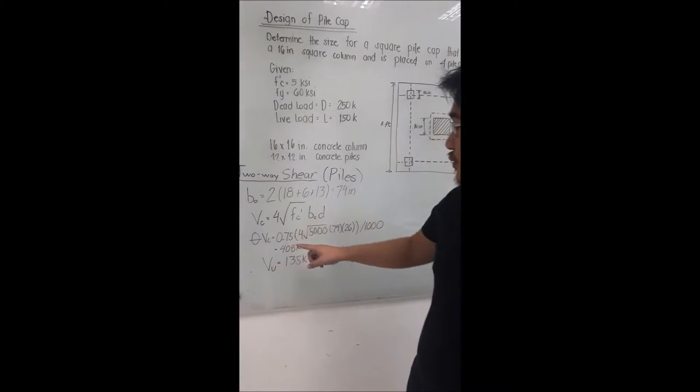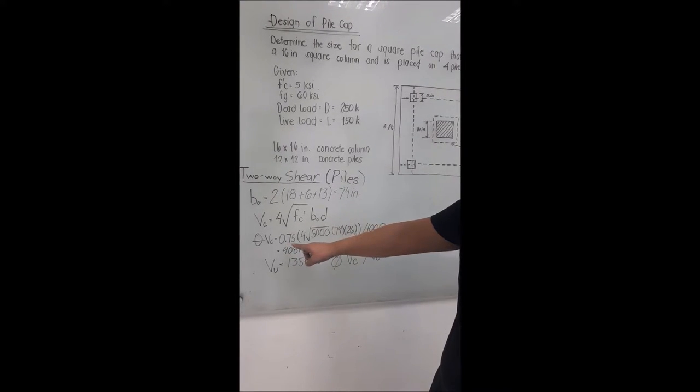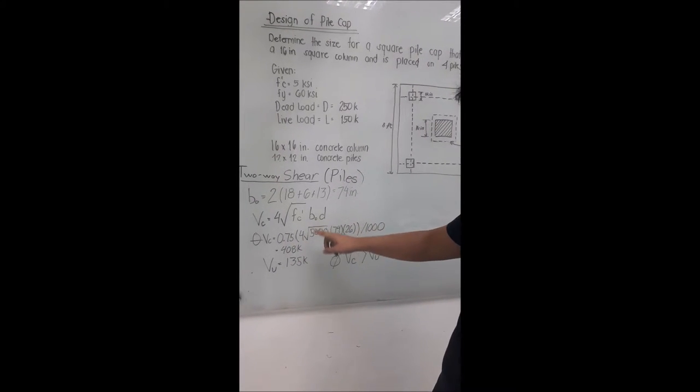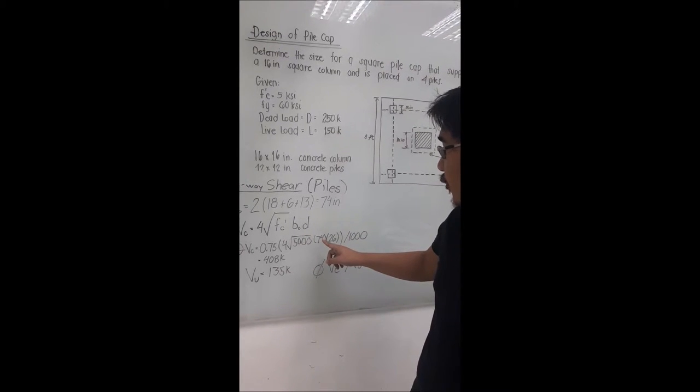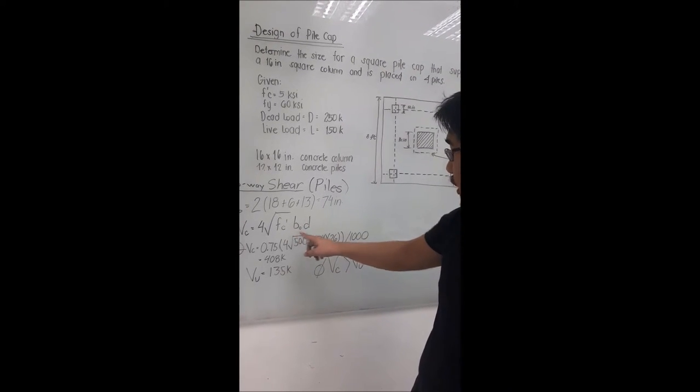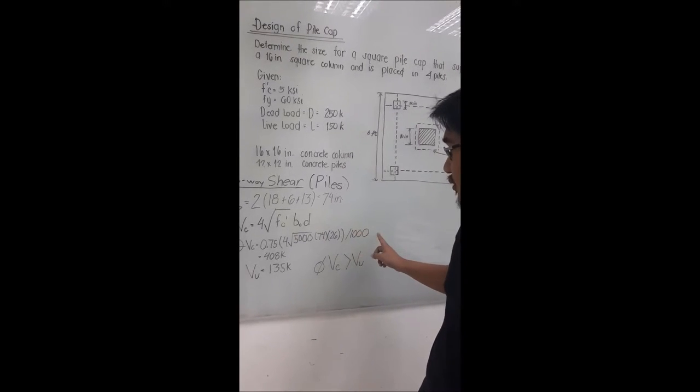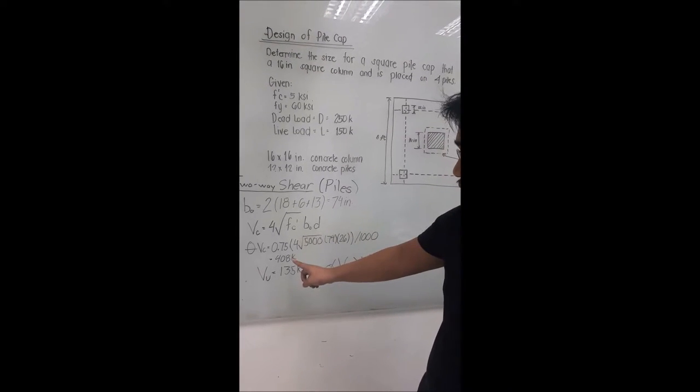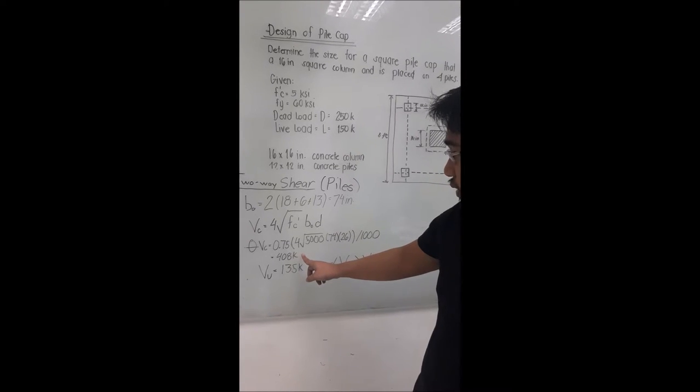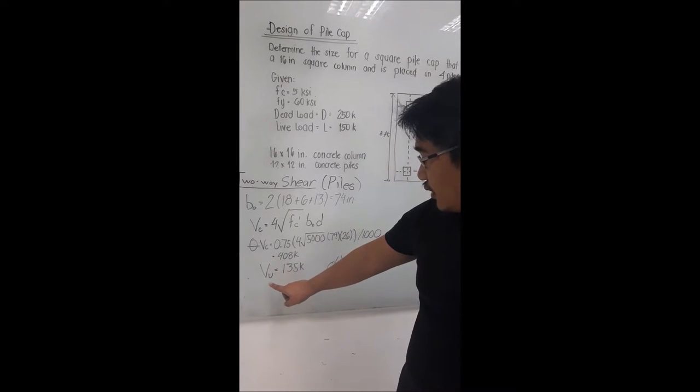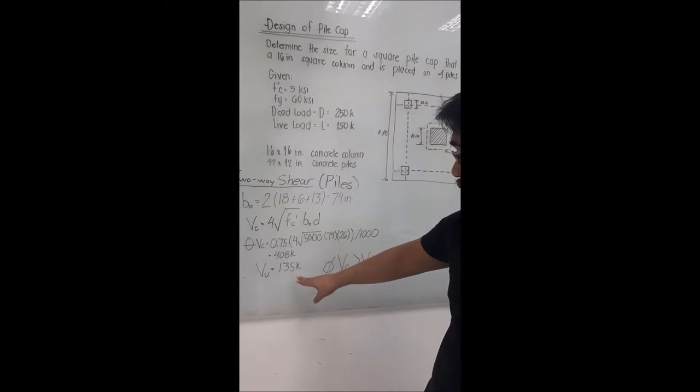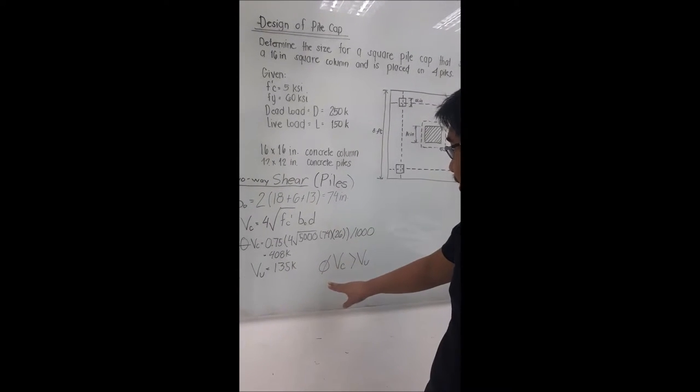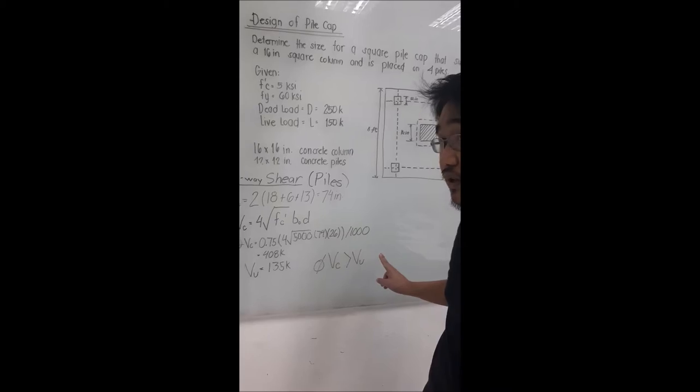Theta VC is equal to 0.75 times 4 times square root of 5,000 which is the FC prime, and 74 which is the V sub O, and 26 which is the D. Divide by 1,000 and you will get 408 kips. The value of VC is equal to 135 kips. Theta VC is greater than V sub O, so it is safe.